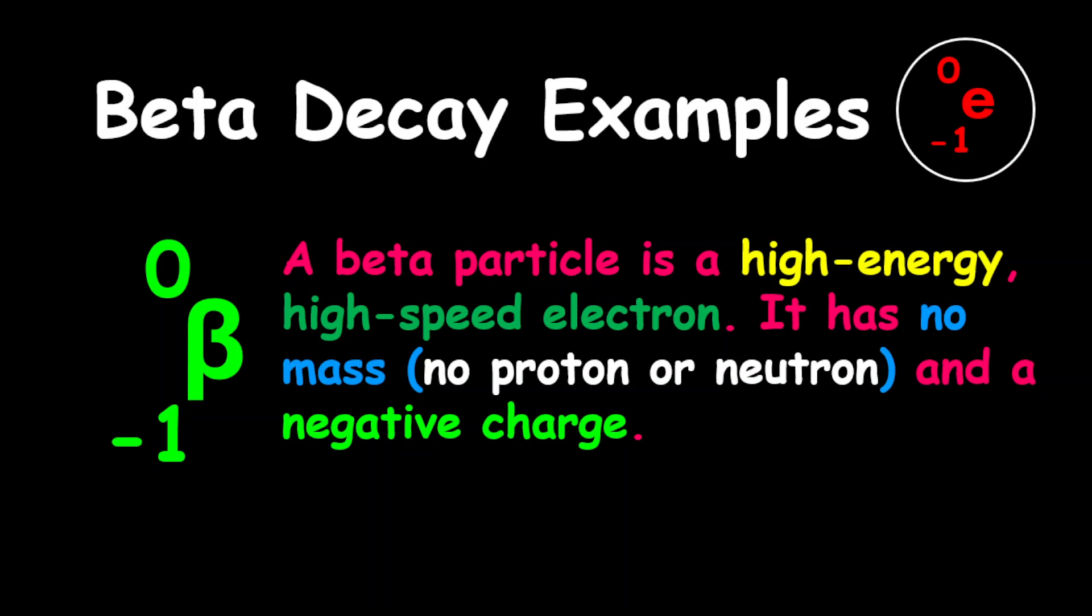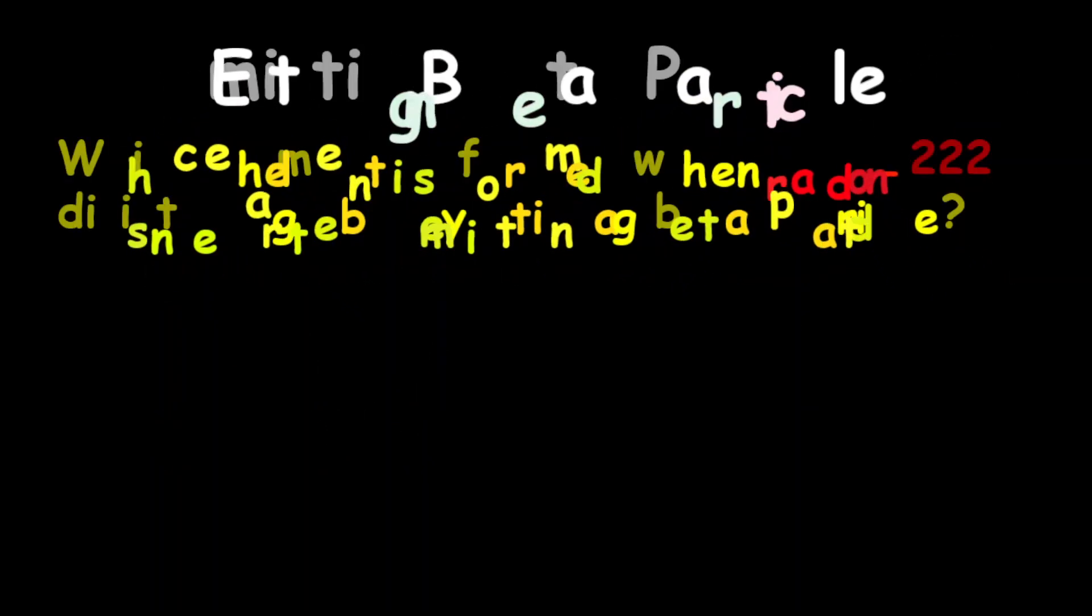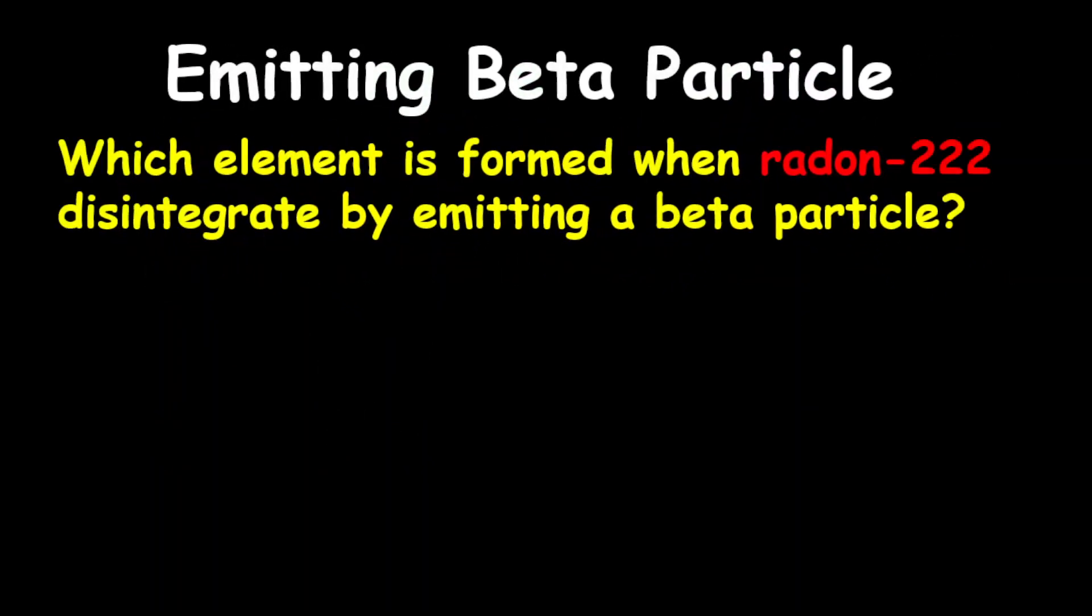Our first two examples will be on the emission of beta particle. The first question reads: which element is formed when radon-222 disintegrates by emitting a beta particle?